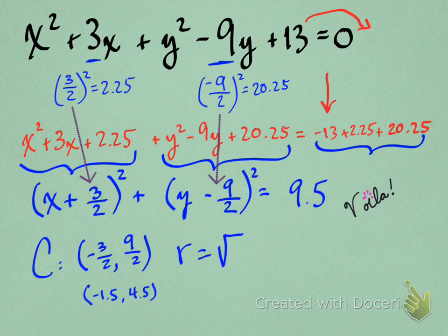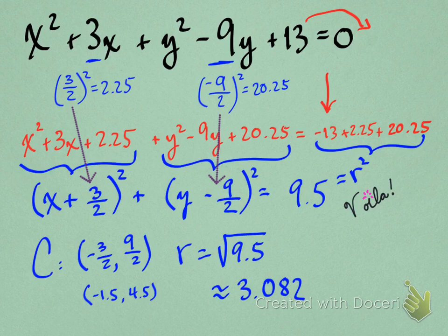And remember, in the equation is r squared, right? So you would write the radius as the square root of 9.5, or if you'd like to approximate it 3.082, that's good also. So that's another example there. It's about as hard as it gets, folks. This isn't such a hard process.